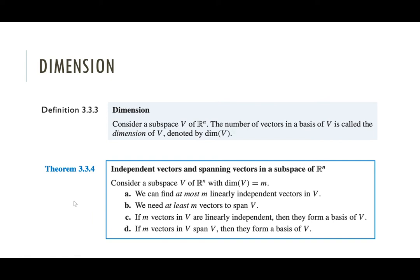Here are some nice facts to have in mind. If a subspace has dimension M, then there are at most M linearly independent vectors in that space, and you need at least M vectors to span it. Probably the most interesting fact is: if you have M vectors that are linearly independent in an M-dimensional space, they automatically form a basis. So if you're asked to find a basis and you find M linearly independent vectors, you're done — you don't have to look anymore.